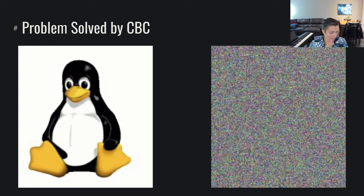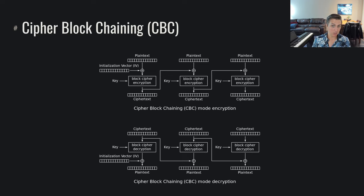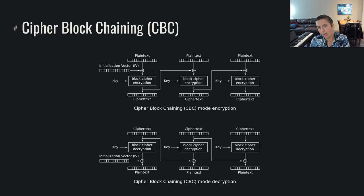There is one problem with CBC and it has to do with performance. If we want to encrypt a massive blob of data — tens or hundreds of millions of blocks — we have to wait for the previous block to be encrypted before we can encrypt the next one. We didn't have that with ECB mode because each block could be independently encrypted and parallelized across cores. With CBC we have to do them all sequentially, which is a downfall depending on the application and how much data we need to encrypt.